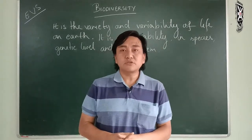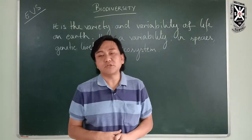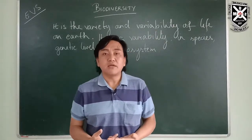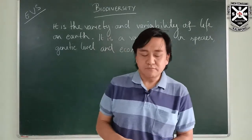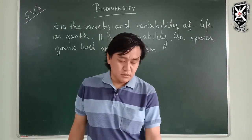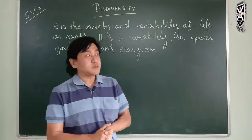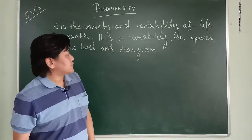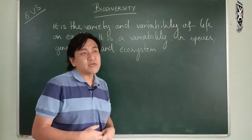From that point on, life started as simple single-cellular organisms, then became multicellular, and kept on growing and diversified into many forms of life. To understand this, we first need to know about variability — what biodiversity means. Diversity means it is a variability of life on earth — variability in species, at the genetic level, and in ecosystems.